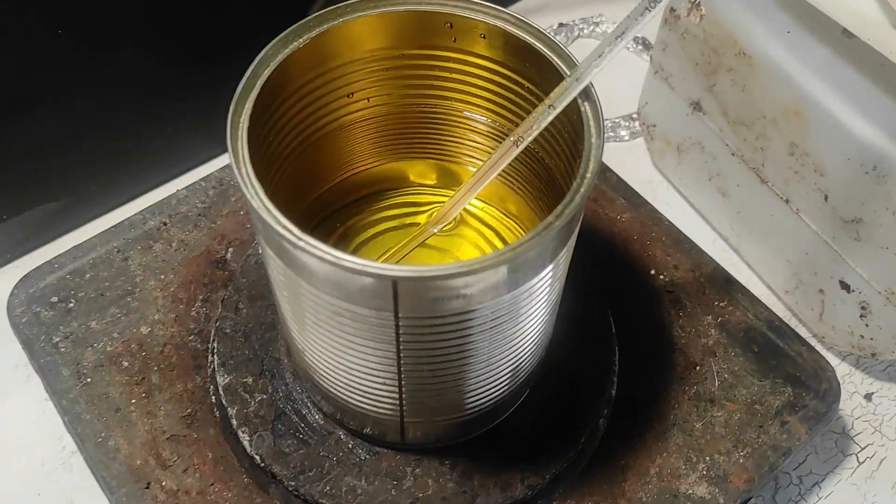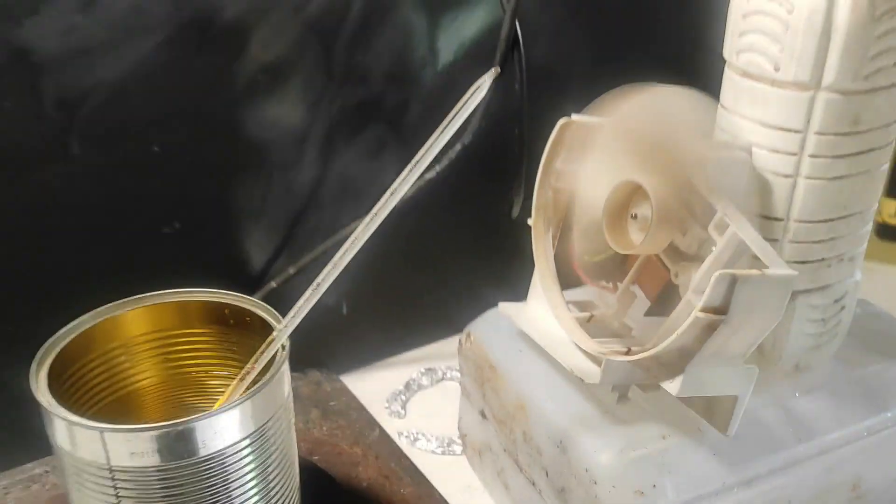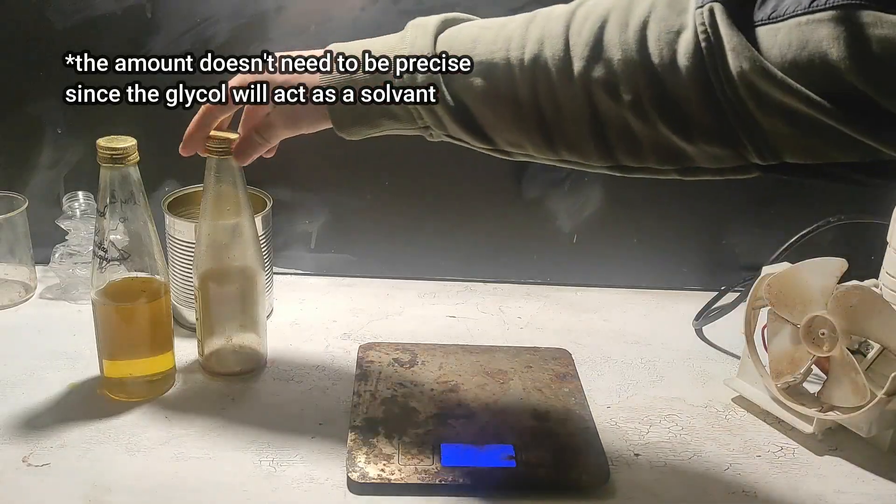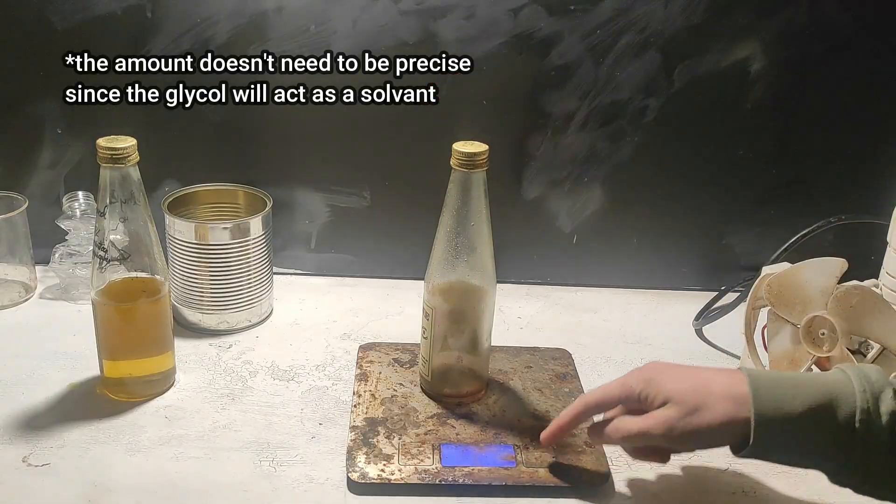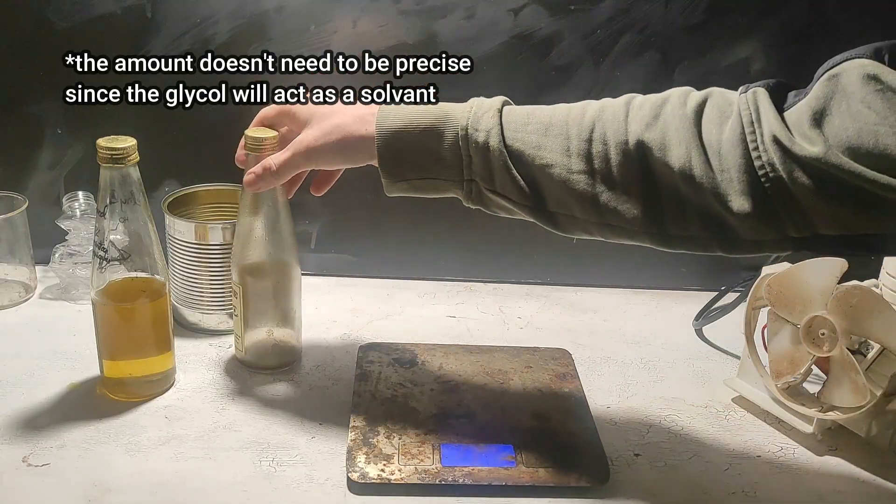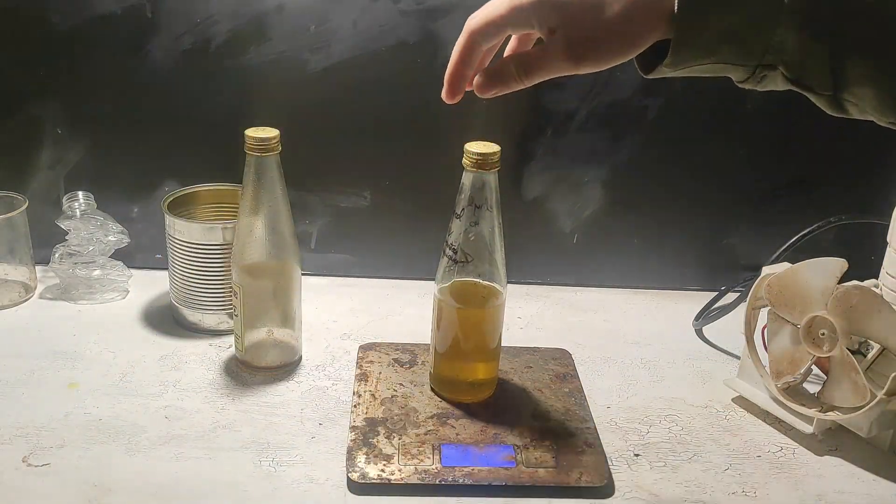I also did a second batch in this can to make sure I will have enough ethylene glycol. And to measure how much I made, I first weighed the empty bottle, and then the full one. And it seems like we have 221 grams, that's a pretty good amount.